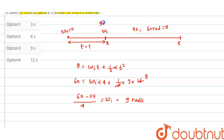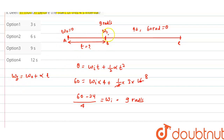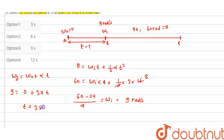Now we apply the equation ω_final = ω_initial + α × t for the interval from A to B. Here, ω_final = 9 rad/s, ω_initial = 0 (started from rest), and α = 3 rad/s². So 9 = 0 + 3 × t, giving t = 3 seconds.